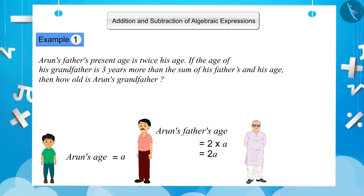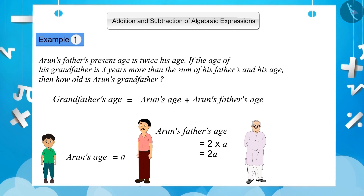As we know that Arun's grandfather's age is 3 years more than the sum of Arun's and his father's ages, grandfather's age equals Arun's age plus father's age plus 3, which is a plus 2a plus 3. Here, a and 2a are like terms and 3 is an unlike term. Adding the like terms, we get 3a plus 3, which is the age of Arun's grandfather.